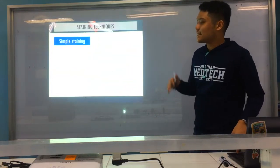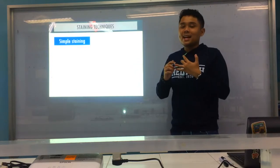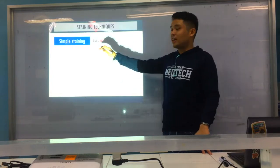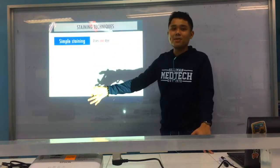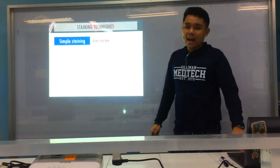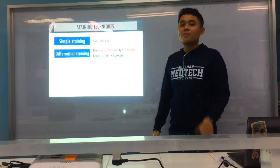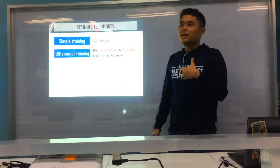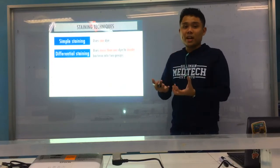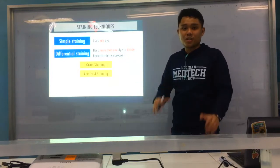Now we go into different staining techniques — that's a different class from classification of stains. First is your simple staining: only one dye. You can apply methylene blue, india ink, or safranine — just one dye. And when we say differential staining, two or more dyes to divide the bacteria into two groups. A very good example of differential staining: gram staining and acid fast staining.